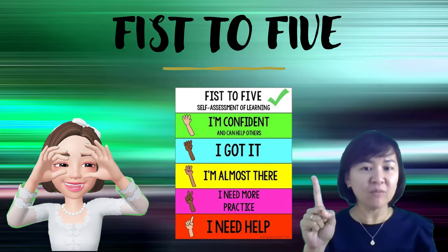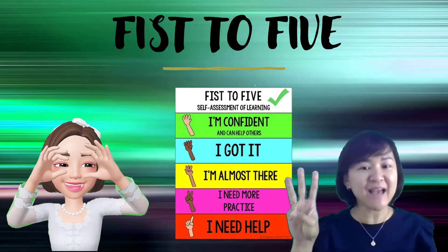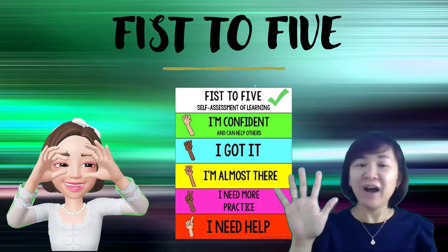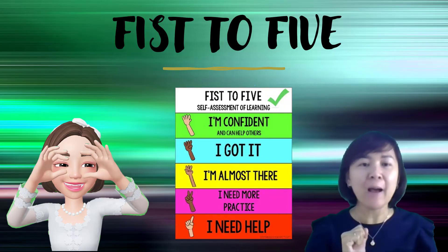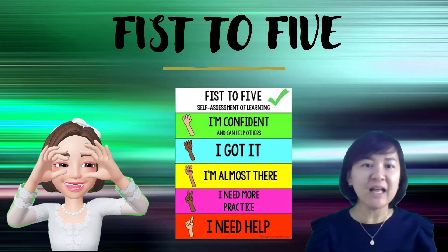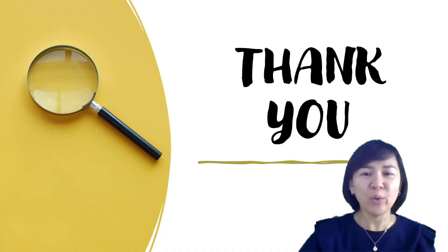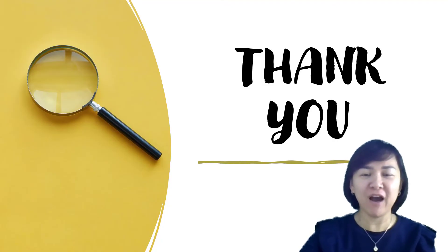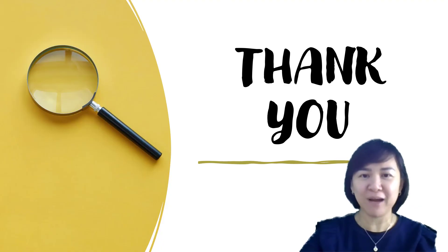The rating scale: 1 means I need help, 2 means I need more practice, 3 means I'm almost there, 4 means I got it, and 5 means I am confident and can help others. For students who rate 1 to 3, please re-watch the video. Students who rate 4 or 5 can proceed to the next subtopic, 1.2 Sequences. Don't forget to like and subscribe. See you in the next video. Bye!